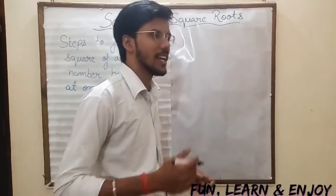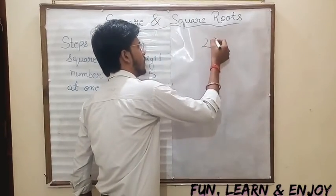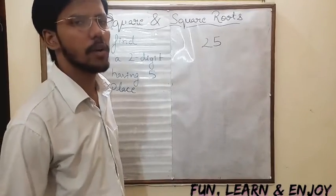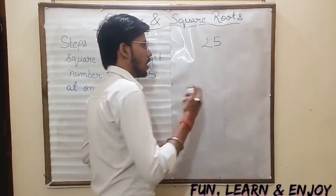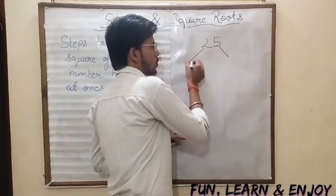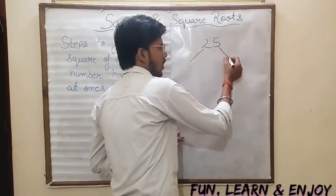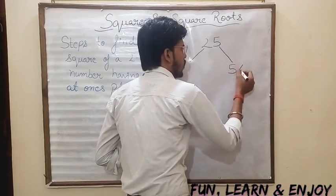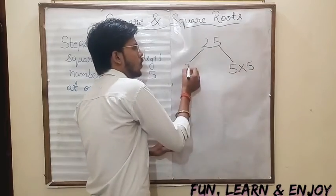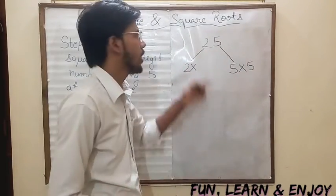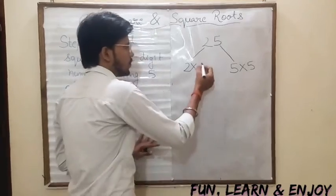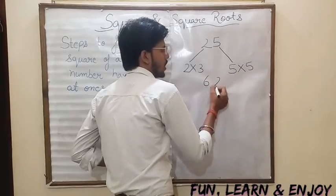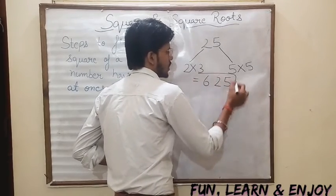So if I take a two-digit number, that is 25. I would be taking the digits separately. I will multiply 5 into 5, and 2 multiplied by the next number in counting — after 2 comes 3. So 3 twos are 6, and 5 twos are 25. This is our answer: 625.